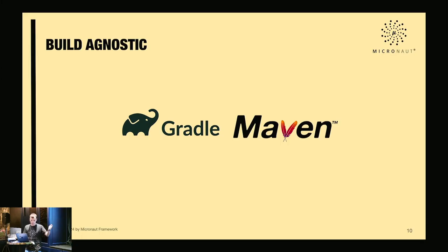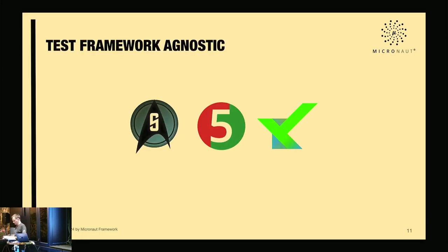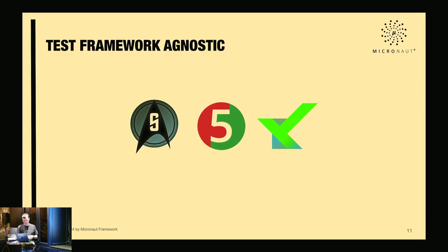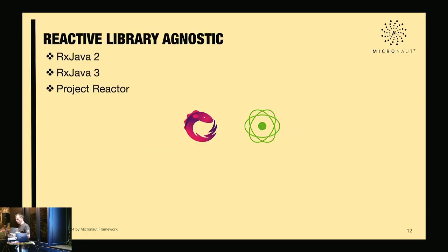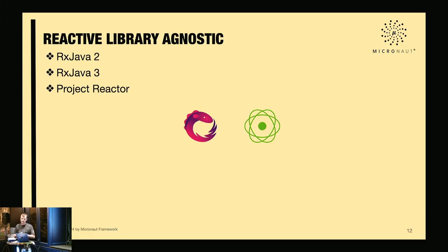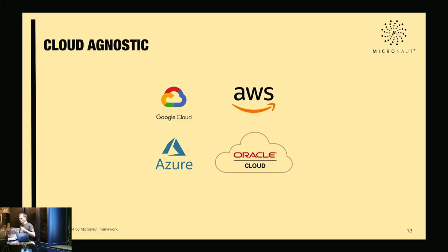For testing, Micronaut supports Spock — a great testing framework to use with Groovy — JUnit 5, and Kotest as well. For reactive libraries, with virtual threads the Java world is moving away from reactive, but Micronaut supports RxJava 2, RxJava 3, and Project Reactor. The framework internally uses Project Reactor but exposes a Publisher so you can use whichever library you prefer.